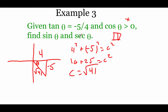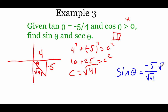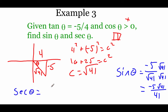Using this triangle, sine is opposite over hypotenuse: negative 5 over root 41. Rationalizing by multiplying by root 41 gives negative 5 root 41 over 41. For secant, which is the reciprocal of cosine (hypotenuse over adjacent), we get square root of 41 over 4.